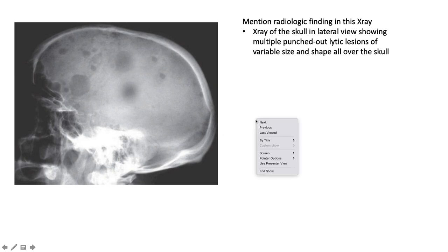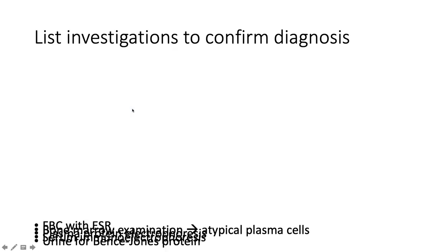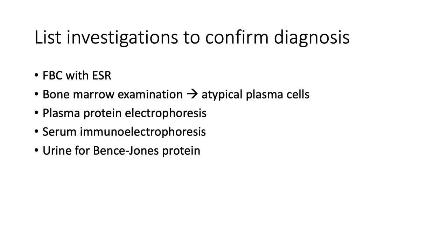This skull X-ray shows multiple punched-out lytic lesions of variable size and shape all over the skull — probably in the setting of multiple myeloma. Investigate with full blood count and ESR, plasma protein electrophoresis, serum immunofixation electrophoresis, urine for Bence Jones protein, serum free light chains, and bone marrow examination looking for atypical plasma cells.